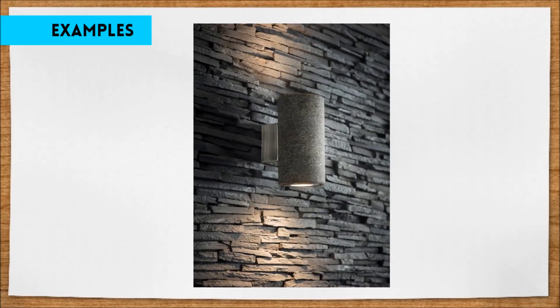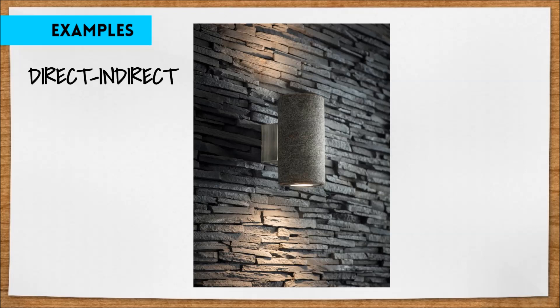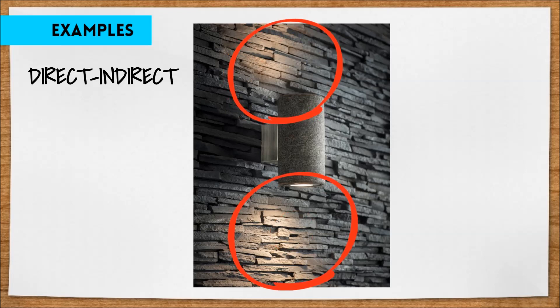Now let's look at a couple of real-life examples. What would you classify this fixture as? This fixture has direct-indirect distribution. You can see here that the light is split 50-50, with half of it being distributed upward and the other half downward.